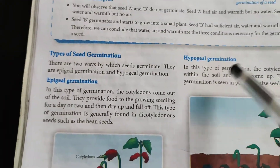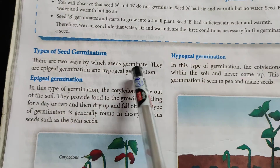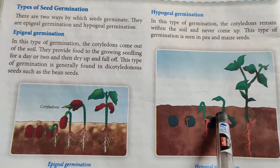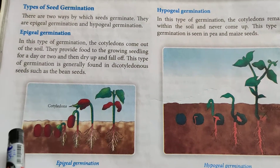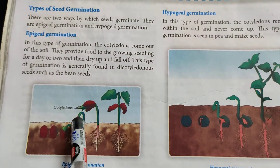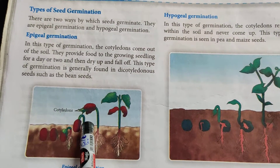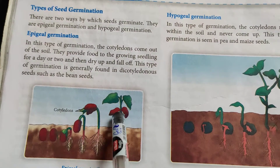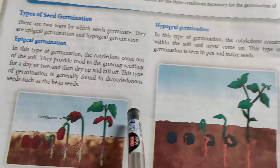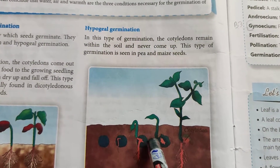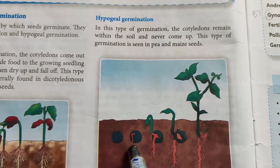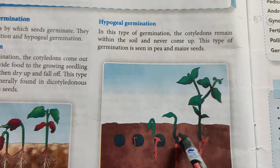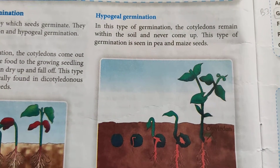Types of germination: there are two ways by which seeds germinate — epigeal germination and hypogeal germination. In epigeal germination, the whole cotyledon comes out of the soil. They provide food to the growing seedling for a day or two, then dry up and fall off. In hypogeal germination, the cotyledons remain within the soil and never come up. This type of germination is seen in seeds of pea and maize.